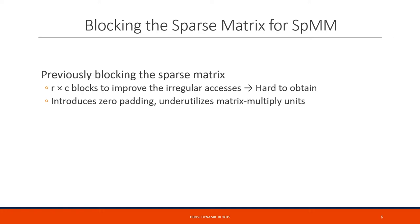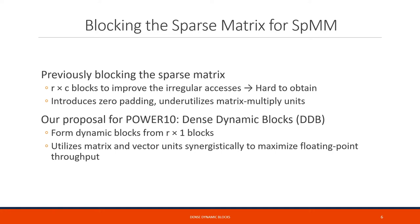After seeing how the MMA operates, our first instinct is to block the sparse matrix to build small R by C blocks that can be mapped to small dense matrix multiply operations implemented with MMA instructions. However, this is a challenging task since these R by C blocks are hard to obtain and they may introduce a lot of zero padding. This may cause underutilization of matrix multiply units. As a result, we propose a more flexible approach: dense dynamic blocks, DDB.